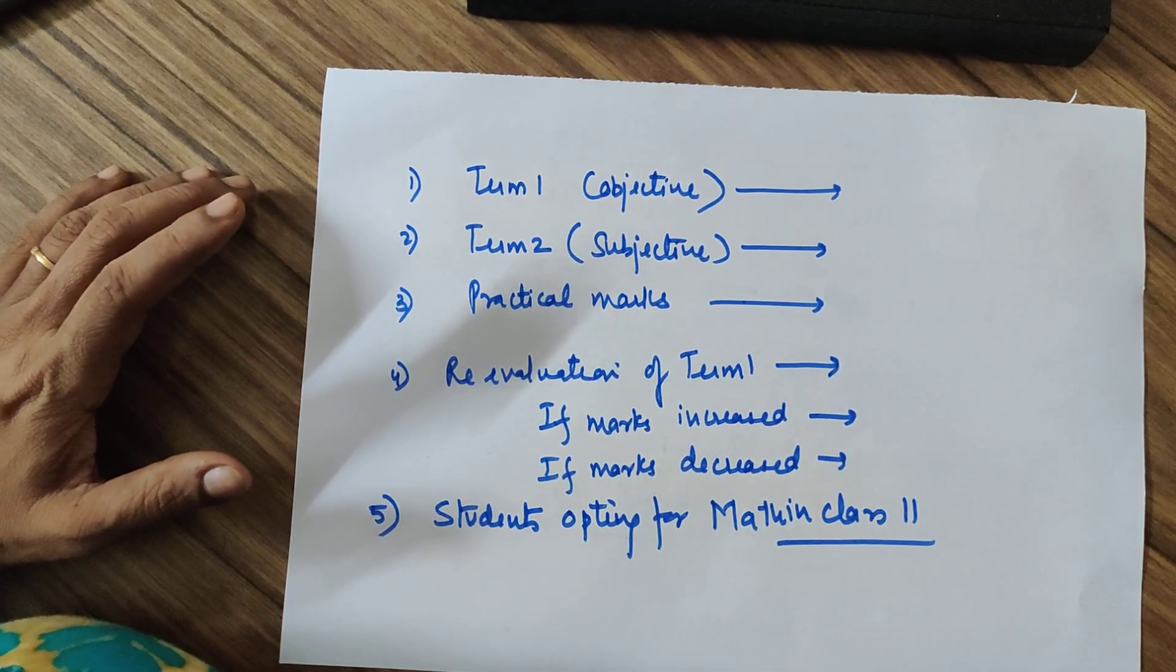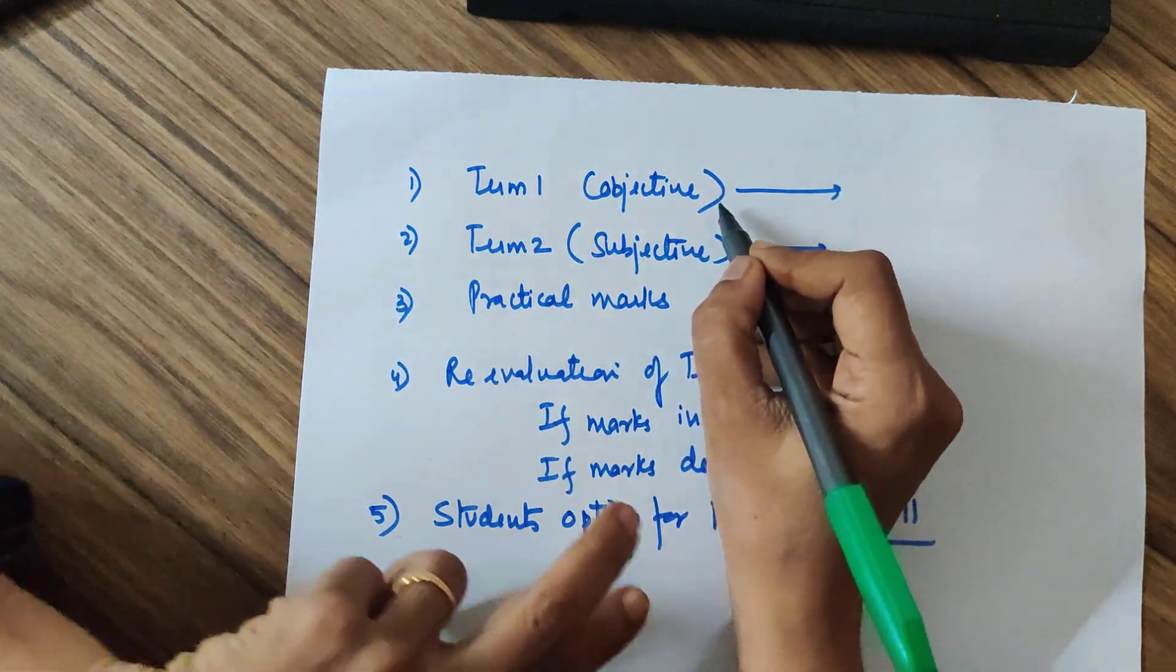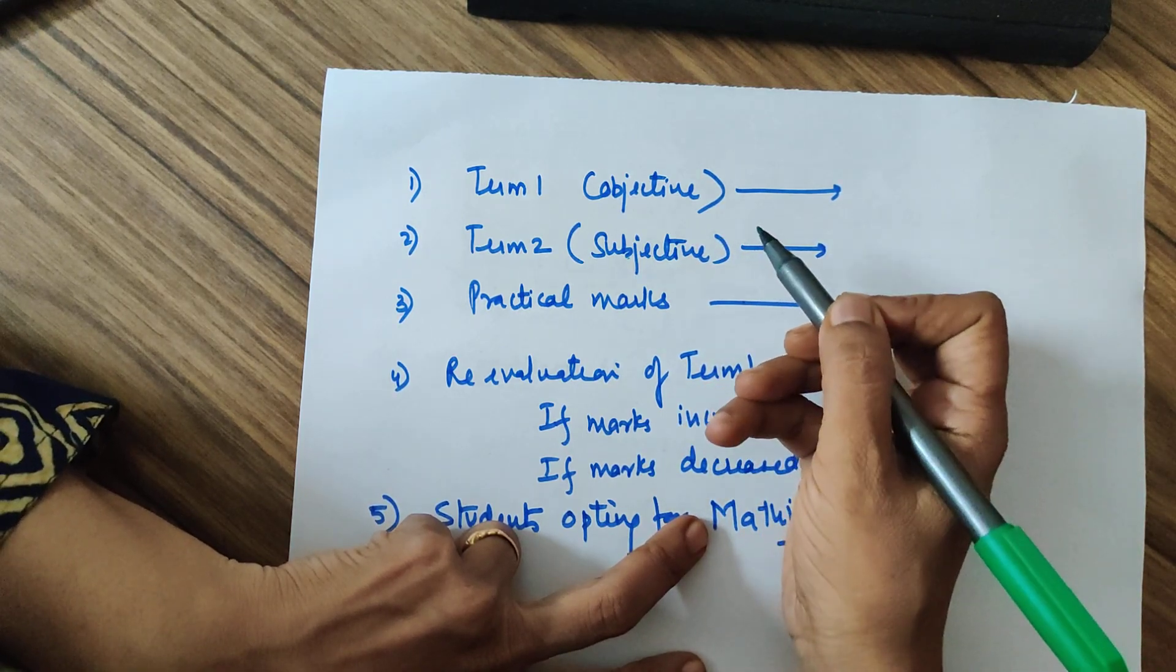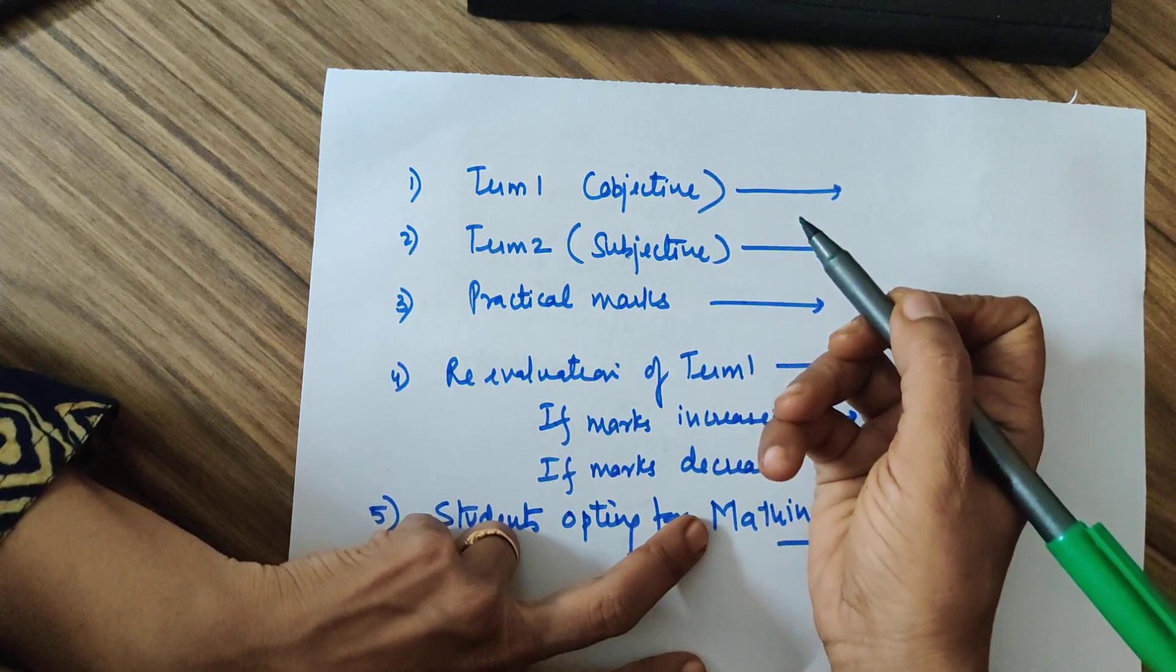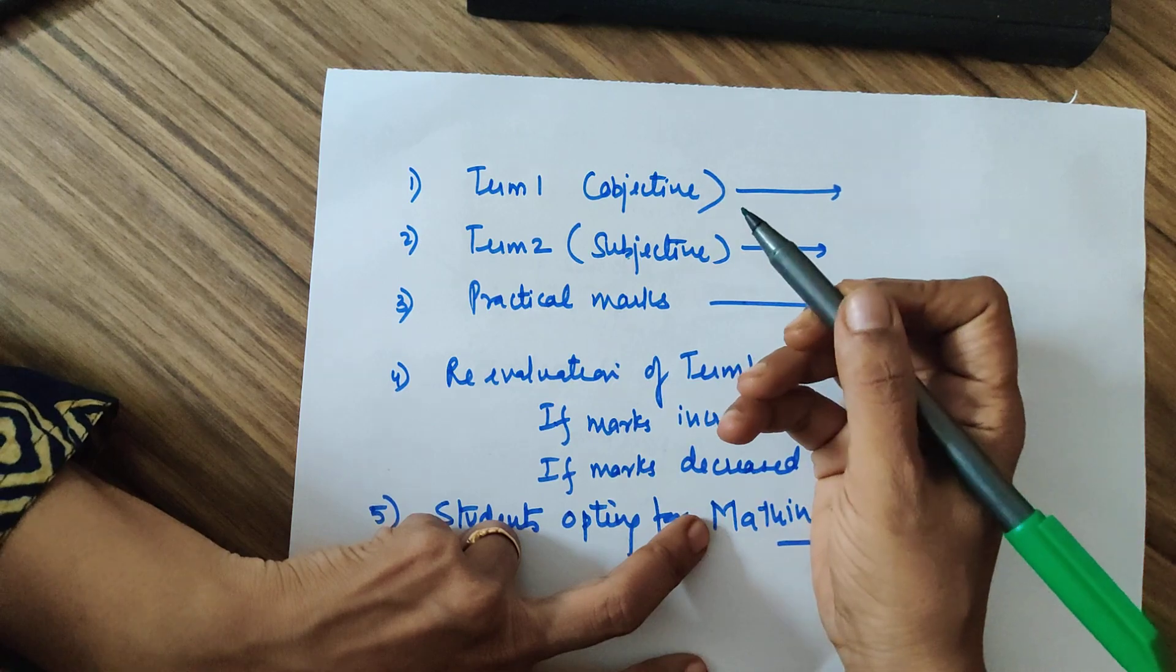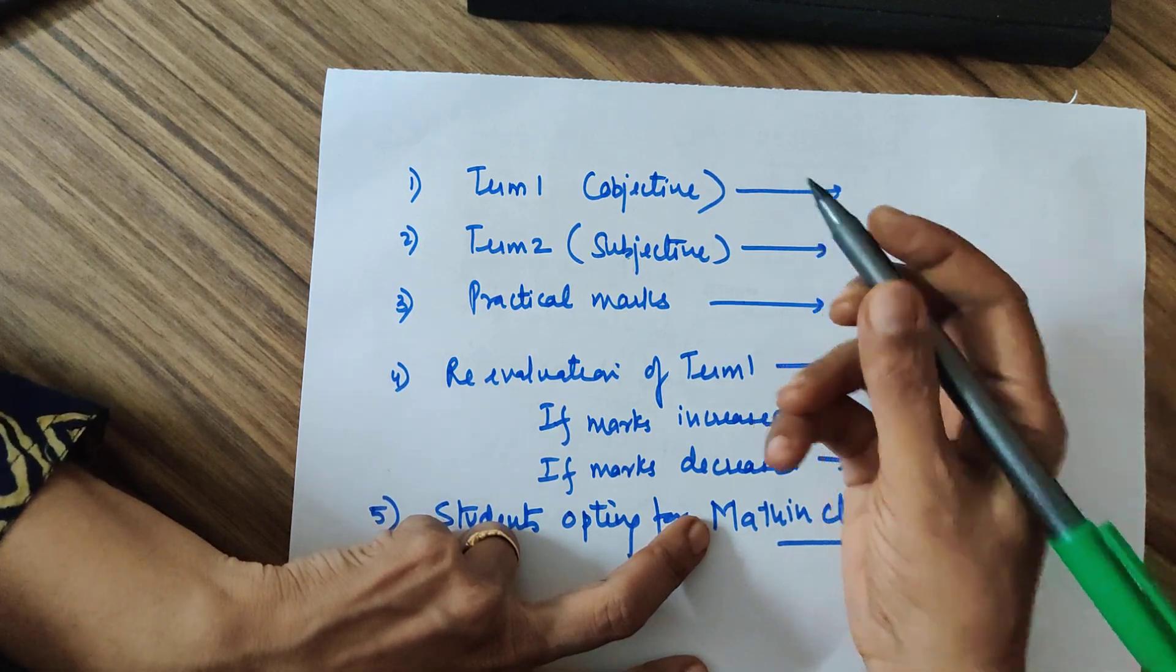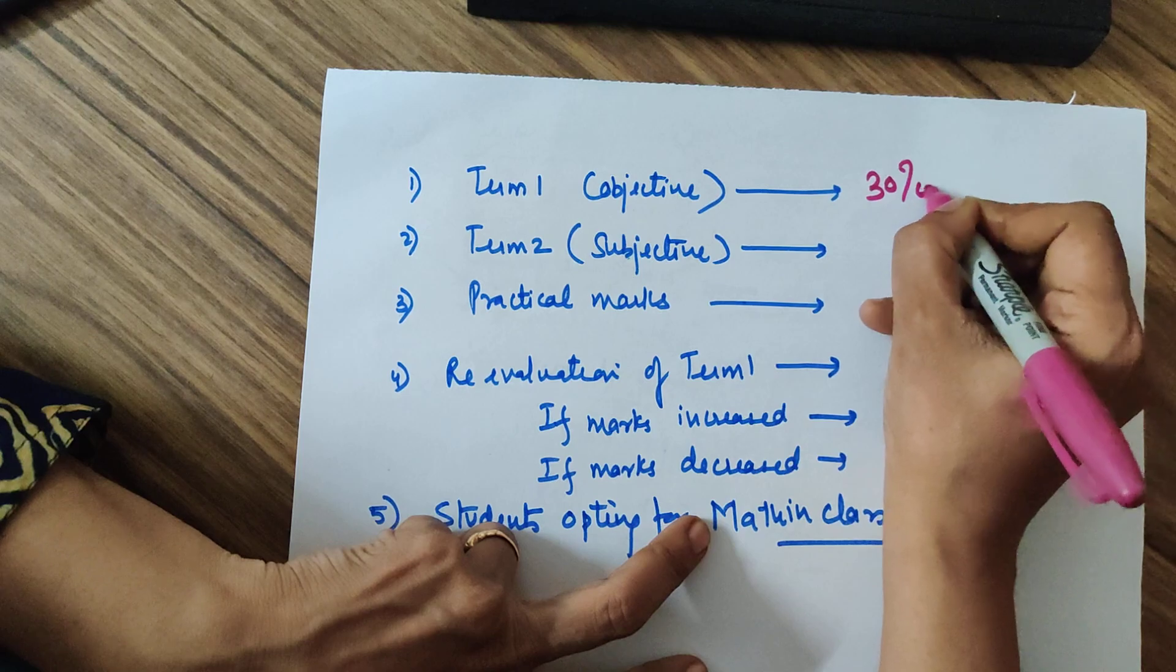As you very well know, the Term 1 paper was an objective paper and Term 2 was a subjective paper. The CBSE has checked with all sources by common analysis surveys and it was found that students were not happy with the first term examination which was objective. There were unfair means also. The weightage given to the Term 1 examination therefore is only 30%.